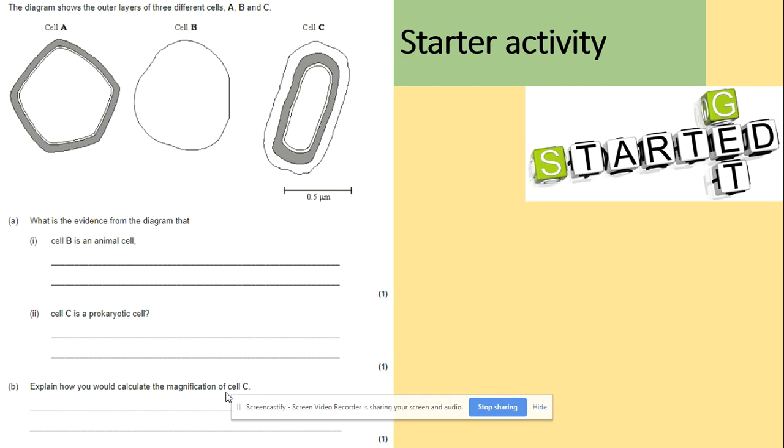So here we've got a quick question. The diagram shows outer layers of three different cells A, B and C. What's the evidence from diagram that cell B is an animal cell, cell C is a prokaryotic cell, and explain how would you calculate the magnification of cell C.